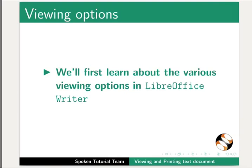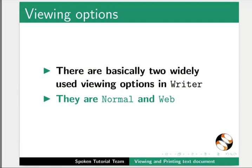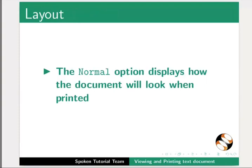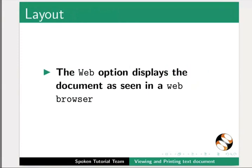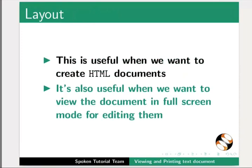We will first learn about the various viewing options in LibreOffice Writer. There are basically two widely used viewing options in Writer: Normal and Web. The Normal option displays how the document will look when printed. The Web option displays the document as seen in a web browser, which is useful when we want to create HTML documents or view the document in full screen mode for editing.